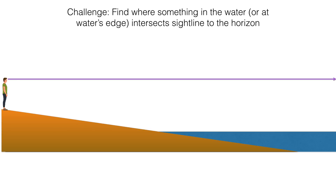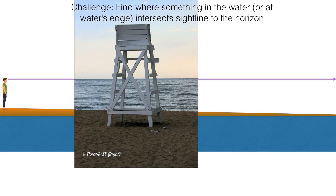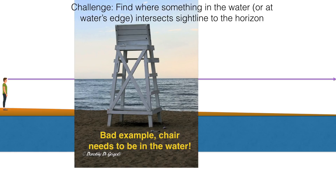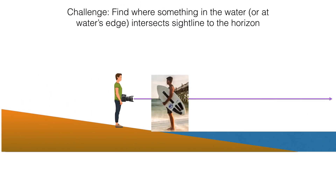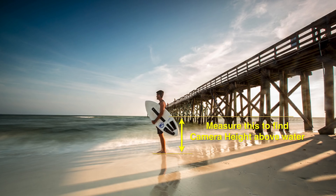So what is our challenge? The challenge is to find something in the water or at the water's edge that intersects our sight line to the horizon. Here's an example: a lifeguard chair. If you knew its dimensions, you could see where the horizon cuts across between the rungs. Unfortunately, that's not a good example because the chair isn't touching the water. We need to find something that's touching the water where we can measure. Maybe the guy's taking a low angle photo with a camera strap of a surfer, but clearly the guy's feet are in the water - so all we have to do is measure that. Maybe the camera height is about three feet above the water.